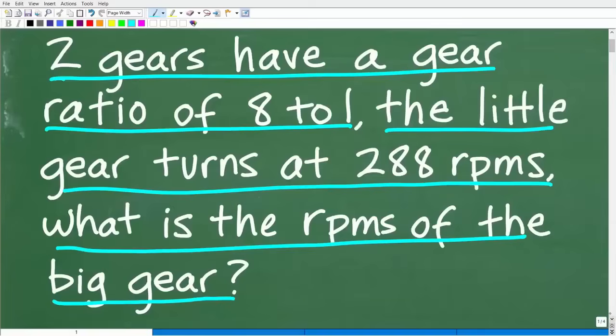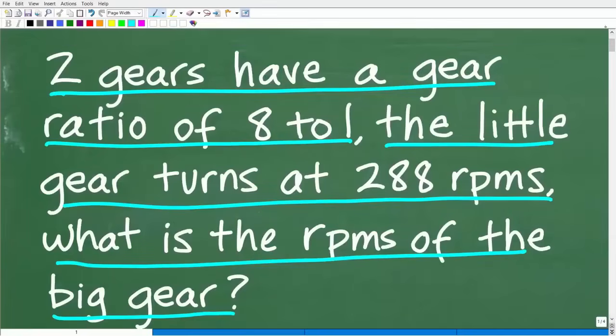Now, some of you may be a little bit lost in terms of the nomenclature. RPM stands for revolutions per minute. Now, hopefully you know what a gear is. A gear are basically mechanical pieces that are found in like transmissions or clocks or watches. Basically, there's one little gear like so, and it has little things on it, gear teeth, and it turns another gear.